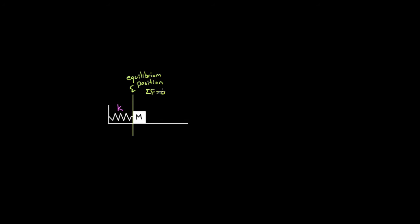For a mass on a horizontal spring, the equilibrium position is the point where the net force on the mass is zero — where the spring is at its natural length and wouldn't be pushing to the right or the left. If you just put the mass there, it would stay there at rest forever. So let's say we pull the mass to the right a distance d. The spring will pull the mass back to the left and the mass will move through the equilibrium position with some speed.